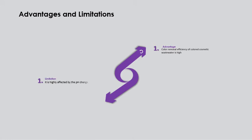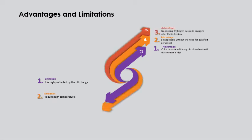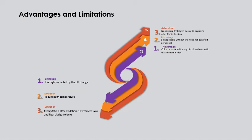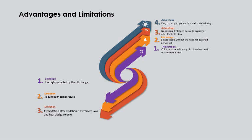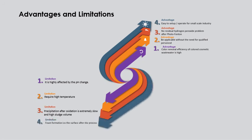Advantages and limitations: The advantages are that color removal efficiency of colored cosmetic wastewater is high; it is applicable without the need for qualified personnel; there is no residual hydrogen peroxide problem after photo-Fenton treatment; and it is easy to set up and operate for small-scale industry. The limitations are that it is highly affected by pH change; it requires high temperature (60°C); precipitation after oxidation is extremely slow with high sludge volume; and foam forms on the surface after the process.